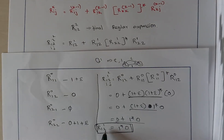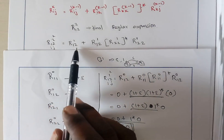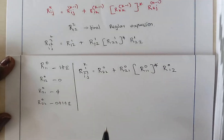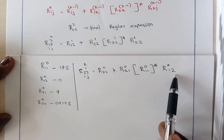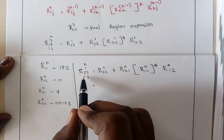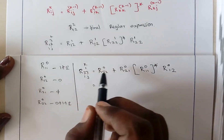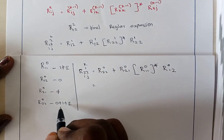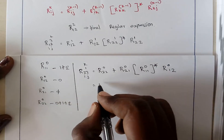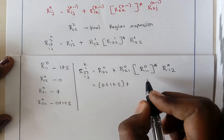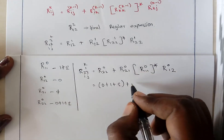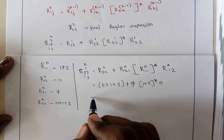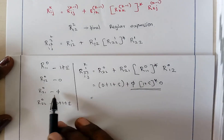Next, we need to find R22 of 1. Here i value is 2, j value is 2, k value is 1. Applying the formula, R22 of 1 equals R22 of 0 plus R21 of 0 concatenated with R11 of 0 star concatenated with R12 of 0. Substituting: R22 of 0 is epsilon plus 0 plus 1, and R21 of 0 is null combined with 1 plus epsilon star and 0.